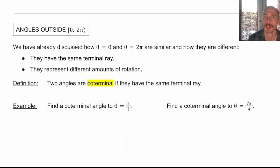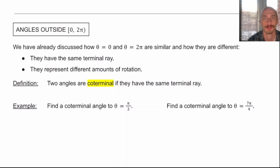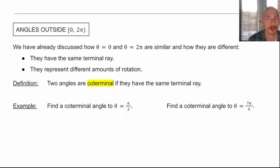First we need to talk about coterminal angles, which is something I've mentioned here or there but not really defined. We've already discussed how θ = 0 and θ = 2π are similar and how they're different — they've got the same spot on the unit circle, they have the same terminal ray, but they represent different amounts of rotation. We're going to say that coterminal means they have the same terminal ray.